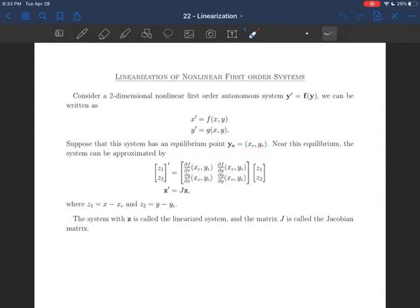So let's consider we have a two-dimensional nonlinear first-order autonomous system. So y' equals f of y, or written out x' equals f of x, y, and y' equals g of x, y. Now, suppose that there's an equilibrium, ye equals (xe, ye). And near this equilibrium, we can approximate this nonlinear system using this linear system. The linear system is two by two, because it is a system of two equations. And the entries in the matrix are exactly these partials, right? So we take the partial of f with respect to x and y, and the partial of g with respect to x and y. And then we plug in the equilibrium into each of those partials.